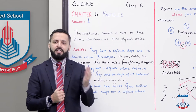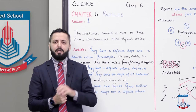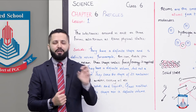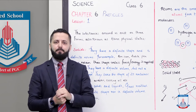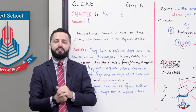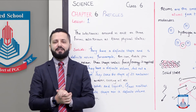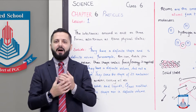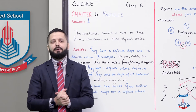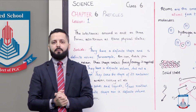So to summarize: solids have a definite shape and a definite volume; liquids have a definite volume but not a definite shape; and gases neither have a definite volume nor a definite shape. These are the three main states in which all substances around us exist — they are all known as matter.